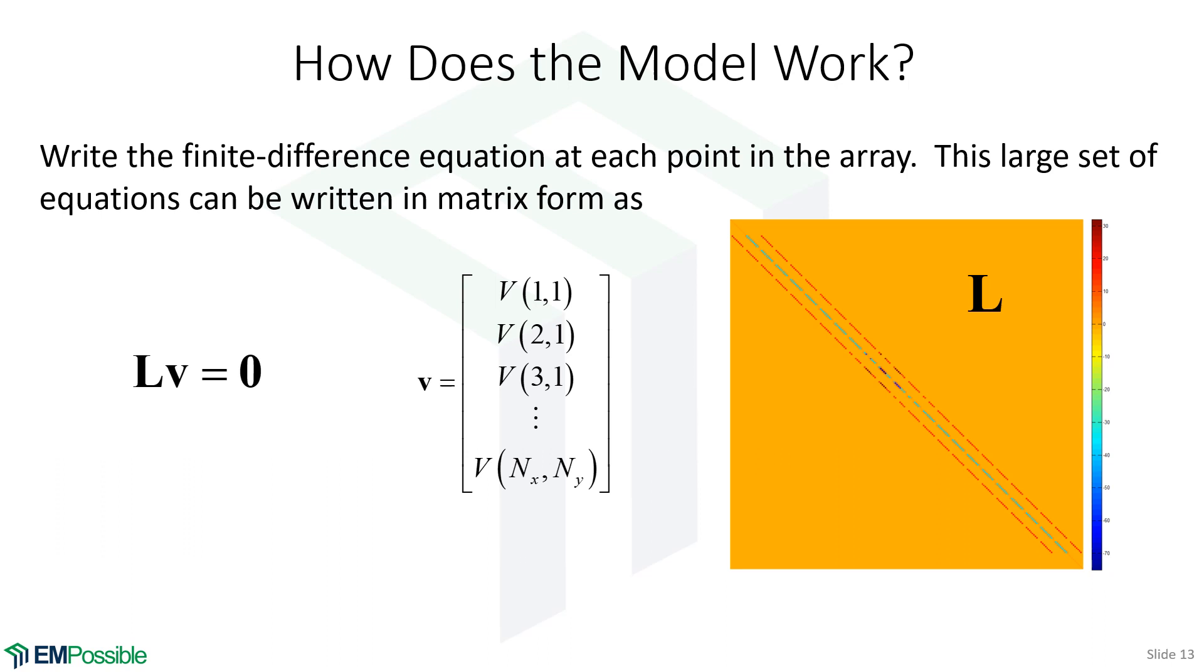We put this large set of 40,000 equations into the form of a matrix equation. We have a big square matrix L pre-multiplying a column vector V equals another column vector of all zeros. So in this column vector V are all of the electric potentials throughout the entire two-dimensional grid. We have the square matrix L, which is essentially calculating a numerical Laplacian of this electric potential. But right now it's set all equal to zeros because that's the equation we used for finite difference approximation.